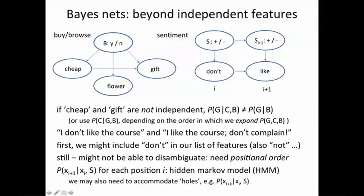In such situations we may also need to accommodate holes. For example, probability of x at i plus k given probability of x at i. So whatever is in between you might have a don't before a like. It might give you a positive or a negative sentiment. Whereas if the don't comes after a like we might get a positive sentiment as more likely. So this is one example of how Bayesian networks allow us to go beyond independence features while building classifiers.